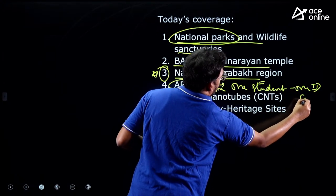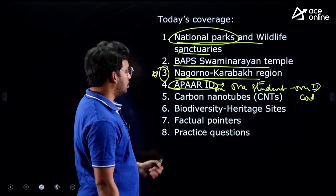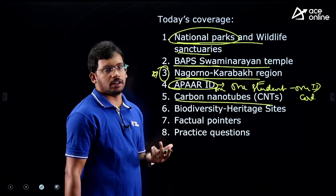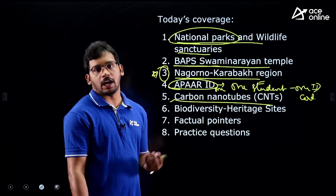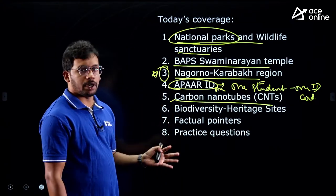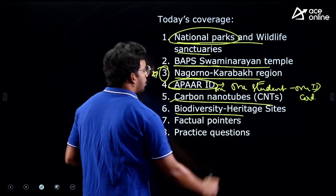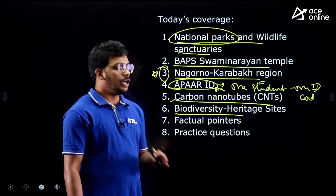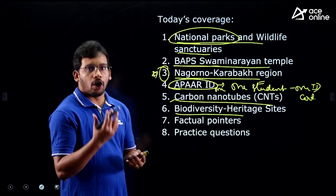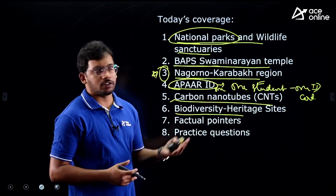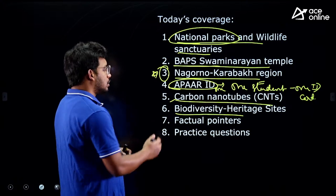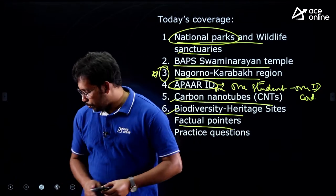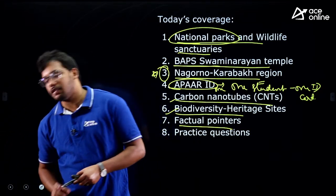Next is APAR ID — one student, one ID card — collected from the Press Information Bureau; it is very important. Then carbon nanotubes, also from PIB; we will briefly see what carbon nanotubes are, and I will also show a question asked in UPSC Civil Services 2020 Prelims. We will also see biodiversity heritage sites — a new one was declared in Odisha — and finally there is one fact and some practice questions.